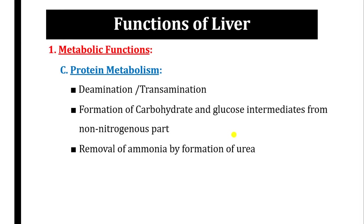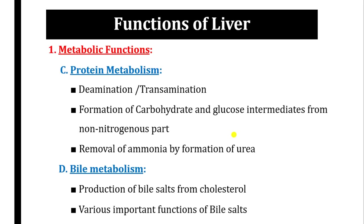Fat metabolism includes beta oxidation of fatty acids, lipoprotein synthesis, ketone body formation, and cholesterol synthesis — these are very important pathways related to fat metabolism. Protein metabolism includes transamination, deamination, and formation of glucose from amino acids via gluconeogenesis. The end product of amino acid metabolism — ammonia — is also taken care of by the liver by converting it into urea.